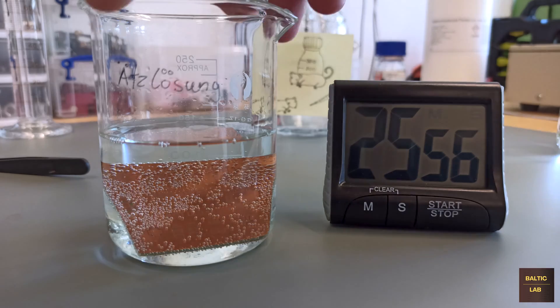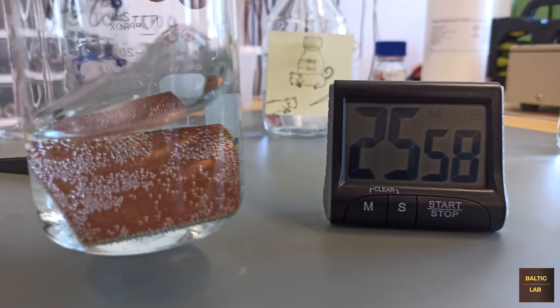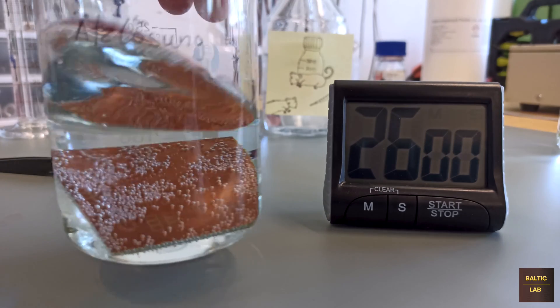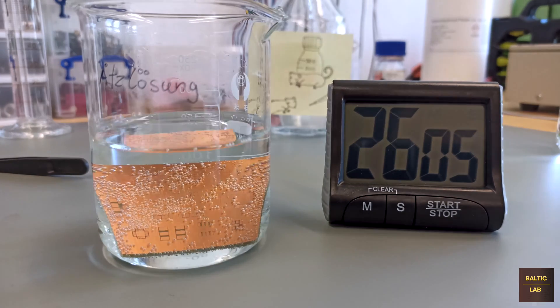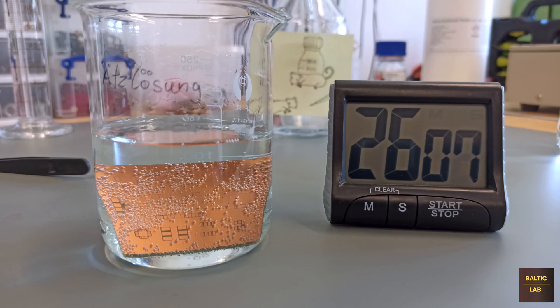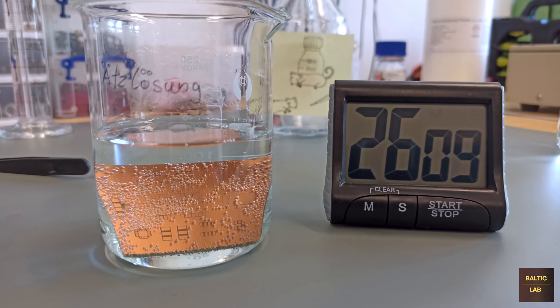The expected etching time for the PCB depends a lot on the features present. For simple PCBs, it can be as low as 20 minutes. For more involved PCBs with fine-pitch SMD footprints, it can be as long as one hour.